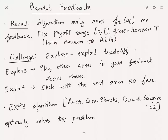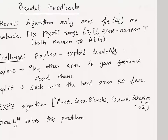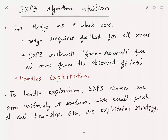For this lecture we are going to see a particular algorithm that gives the optimal bound in the bandit feedback setting. This algorithm is called the EXP3 algorithm, due to Auer et al. from 2002. When I say optimal, I put it in quotes — EXP3 by itself solves optimally only in a certain sense, and then we'll have to modify this algorithm to get true optimality. I'll leave this discussion for the later part of this video.